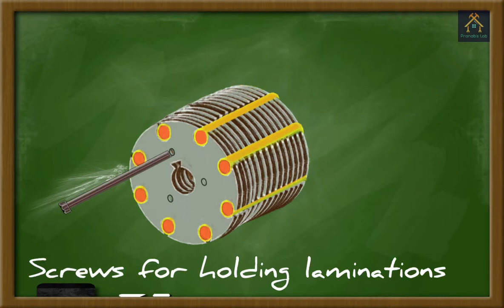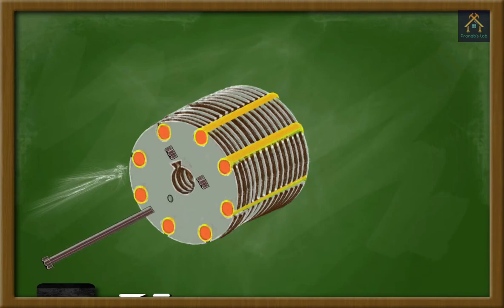For holding the lamination together, three countersunk screws or rivets are inserted into the respective slots of the cylinder.